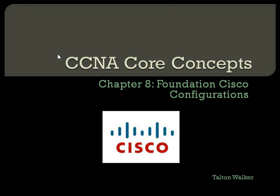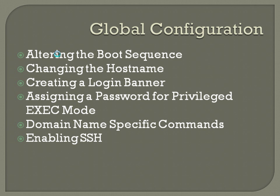We're going to start up now with Chapter 8, Foundation Cisco Configurations. This is when we first really start getting into the configurations of the actual routers and switches. We'll have a slide on each of these, but we'll start off with the global configuration — the various things you can do there, including altering the boot sequence, changing the host name, creating a login banner, assigning a password for privileged exec mode, domain name specific commands, and enabling SSH.